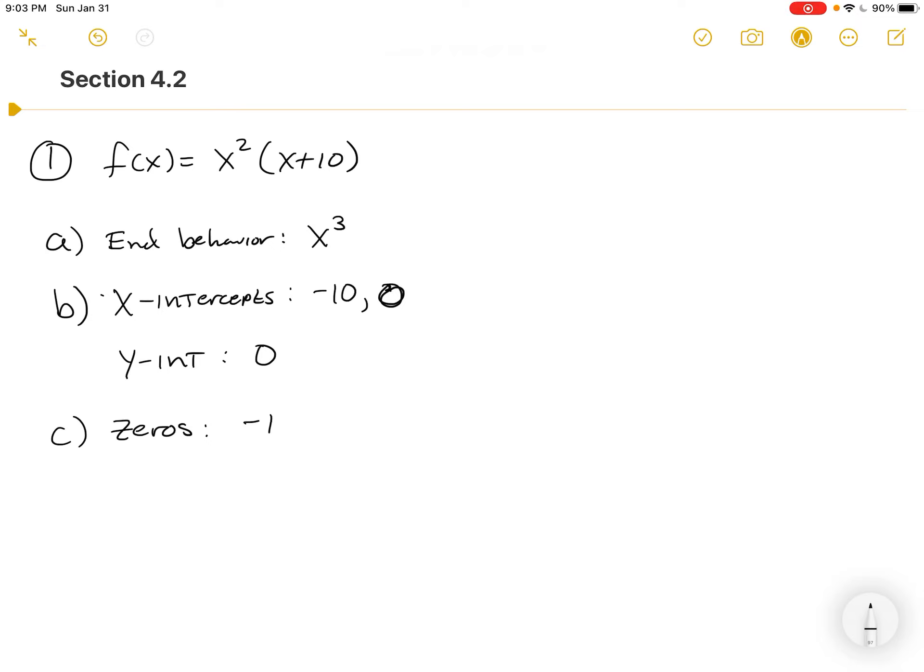Well, the zeros you've already identified as negative 10 and zero. So I have no idea why they asked for it again. And then they want to know what the multiplicity is of each one of them. So the multiplicity of these zeros for the negative 10, it's one. And for the zero, it's two.